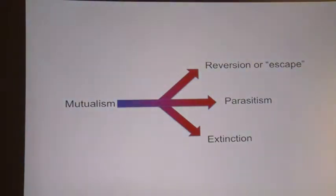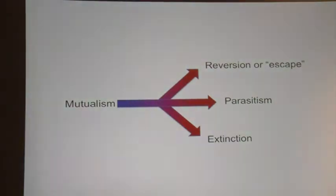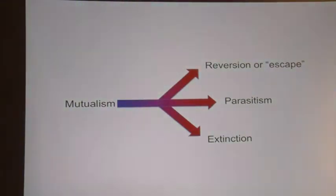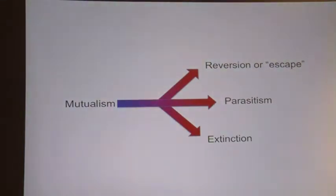Audience question: Can you give examples of where mutualism went to parasitism when humans were involved? That's a really interesting question. Off the top of my head I can't think of a clear example — it would be a lot of work to domesticate something to the point of mutualism and then lose control. There are instances of certain populations of domesticated animals escaping from domestication, but it happens only occasionally.